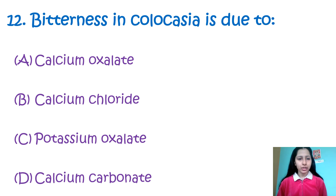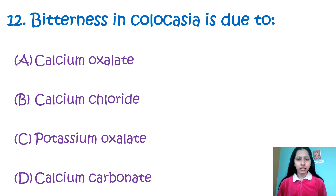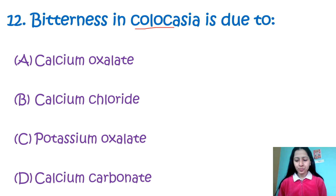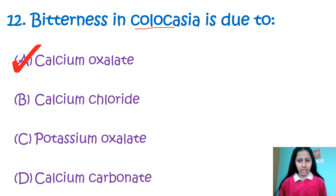Question 12: Bitterness in colocasia is due to — option A: calcium oxalate, B: calcium chloride, C: sodium/potassium oxalate, D: calcium carbonate. Colocasia, known as arbi in Hindi, contains bitterness due to the presence of calcium oxalate. So the correct answer is option A, calcium oxalate.